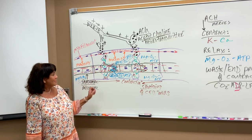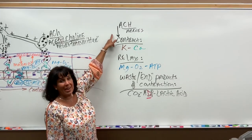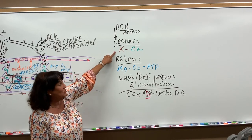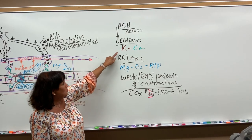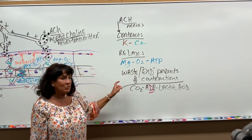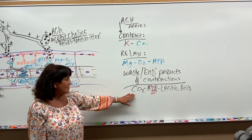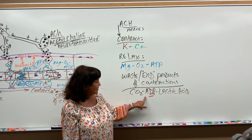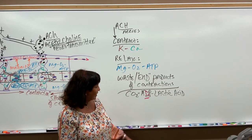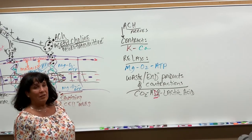The two proteins, actin and myosin, are responsible for the movement. In summary: ACH, a neurotransmitter, comes in and makes the cell move potassium and calcium out of the channels, then it builds the bridges. To relax it, you've got to blow up the bridges using magnesium, oxygen, and ATP. The waste products that accumulate in the cytoplasm are CO2, ADP (adenosine diphosphate - so you need more oxygen to change it back to tri-phosphate), and lactic acid. That's a quick rundown of muscle contraction.